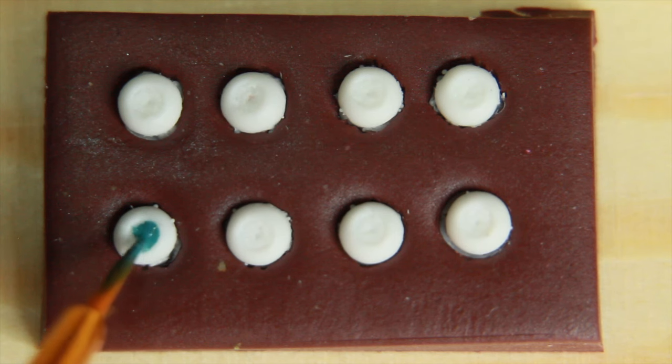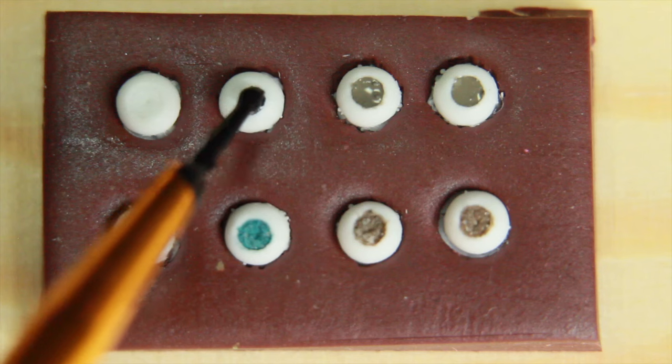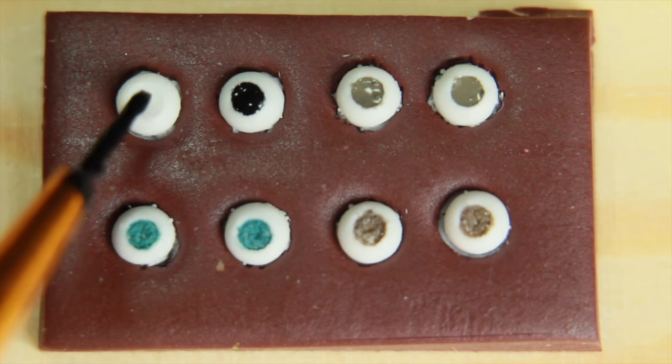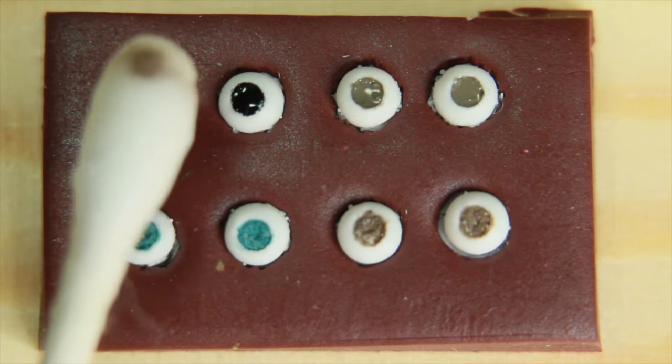Then I paint the iris with acrylic paint. I mix with water to thin the paint and use the darker color that I want in the eye. I wait for it to dry a little bit and with a q-tip I clean any mistakes.